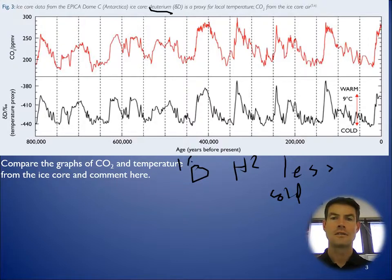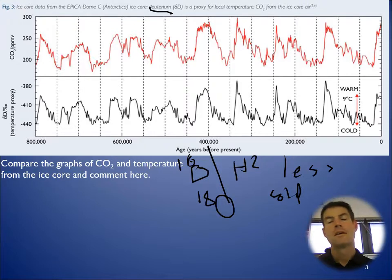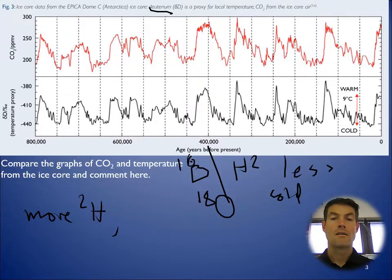Oxygen is usually its normal isotope, O16, and then other isotopes of oxygen are 18. So you look at the ratio between oxygen and deuterium. And remember, like I said, more deuterium, the warmer it is.